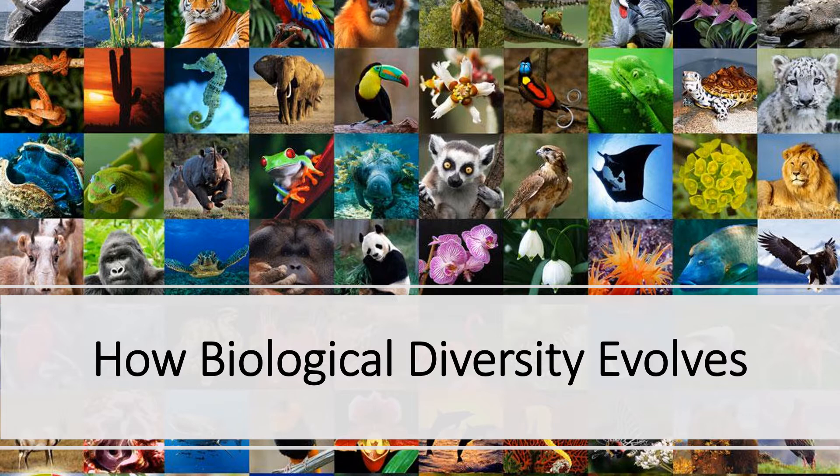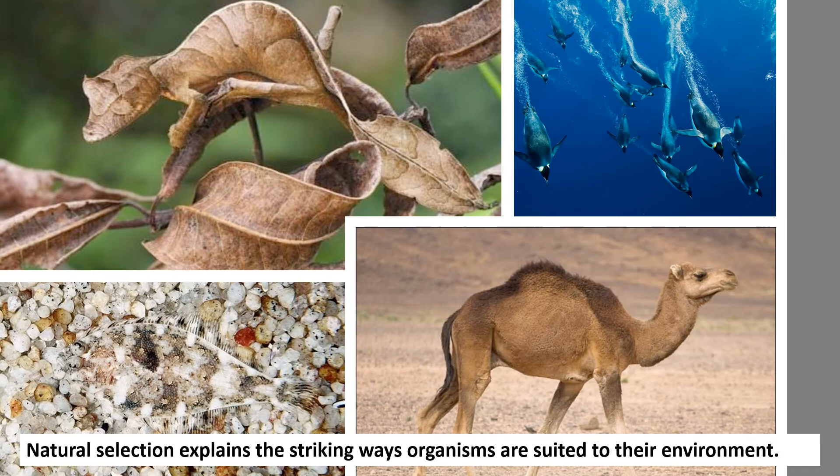In today's lecture we're going to talk about how biological diversity evolves. Last time we talked about Darwin and his theory of evolution — how evolution takes place, natural selection, and descent with modification. Now we're going to put those ideas into action and see how this diversity evolves and how we get the extreme amounts of different species on the planet. One of Darwin's main ideas was natural selection and the way that organisms become adapted to their environment.